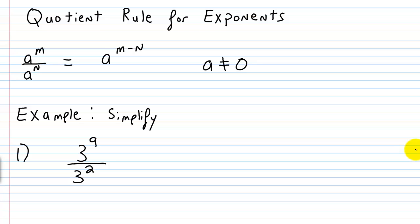Now let's talk about the quotient rule for exponents. This one's pretty simple — it's similar to the product rule for exponents. Essentially, if you have a to the power of m over a to the power of n, it equals a to the power of m minus n, as long as a does not equal zero. So if you have the same base and you're dividing with exponents involved, you keep the base the same and subtract your exponents.